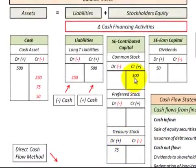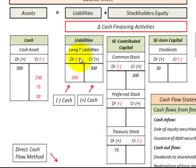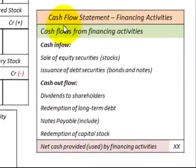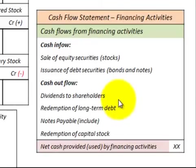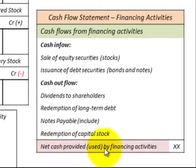In our T-accounts, we have dividends as shareholders' earned capital, and contributed capital includes common stock, preferred stock, and the contra account treasury stock. Liabilities show items like bonds issued to bondholders. You can see the effect on the cash account for each debit and credit. For the cash flow statement for financing activities, cash inflows are the sale of equity securities (stocks) and issuance of debt securities (bonds and notes). Cash outflows include dividends to shareholders, redemption of long-term debt, or redemption of capital stock. The difference gives us net cash provided or used by financing activities.